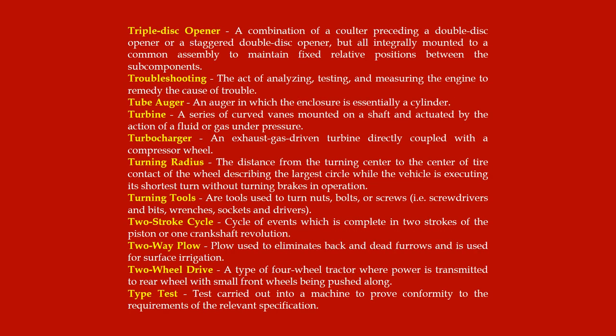Triple disc opener: a combination of a coulter preceding a double disc opener or a staggered double disc opener, all integrally mounted to a common assembly to maintain fixed relative positions between the subcomponents. Troubleshooting: the act of analyzing, testing, and measuring the engine to remedy the cause of trouble. Tube auger: an auger in which the enclosure is essentially a cylinder. Turbine: a series of curved vanes mounted on a shaft and actuated by the action of a fluid or gas under pressure. Turbocharger: an exhaust gas-driven turbine directly coupled with a compressor wheel.